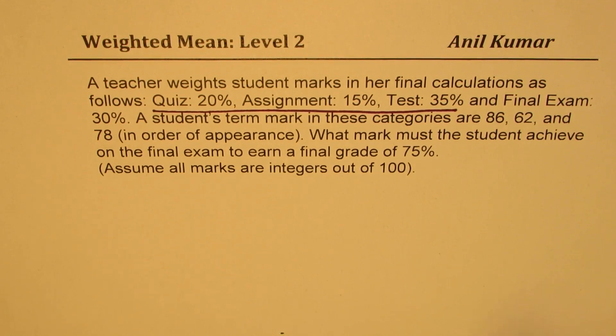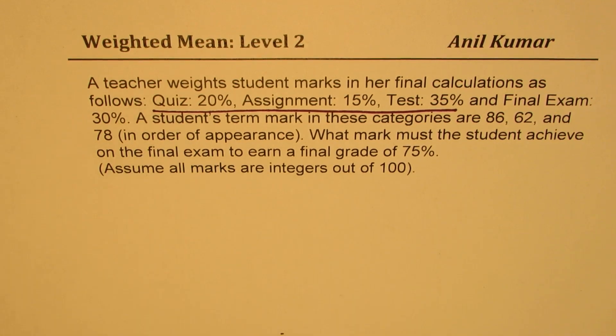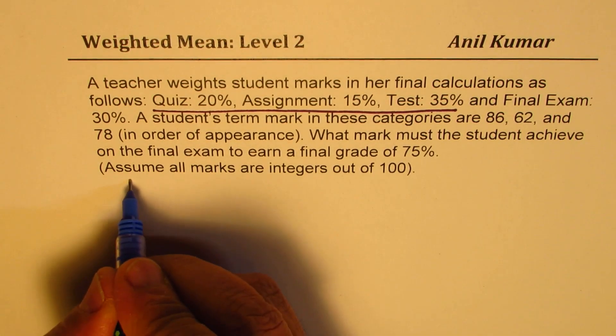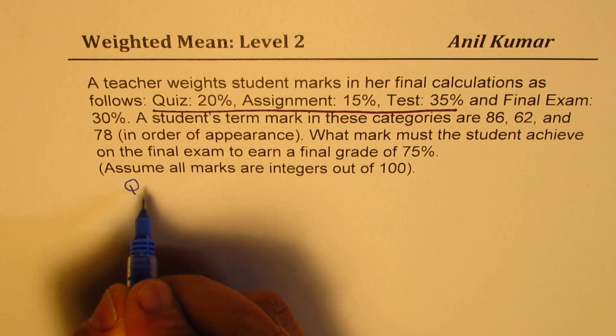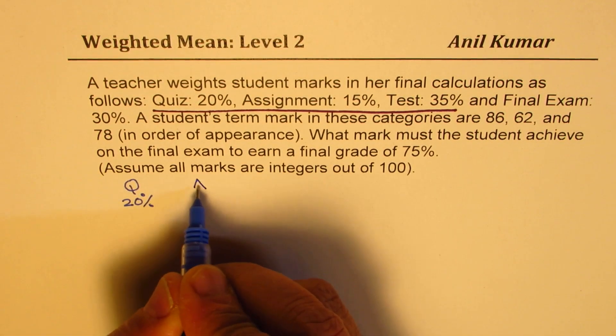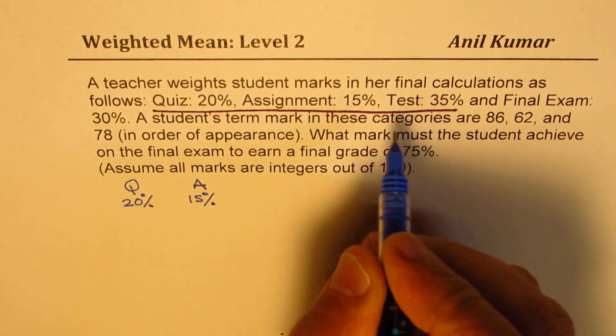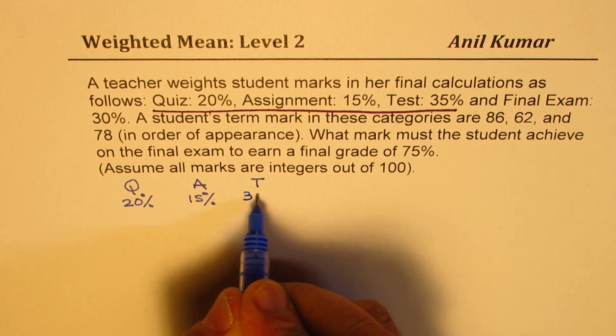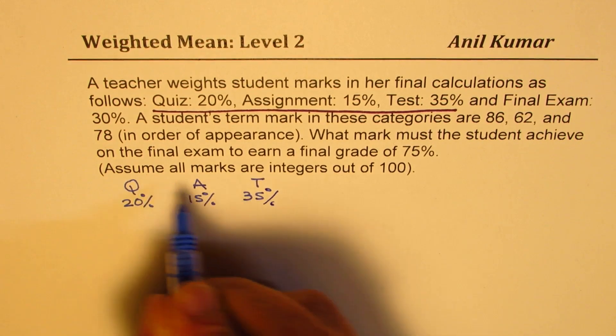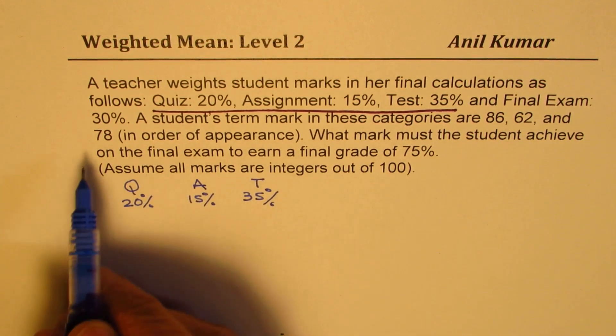As you can see here, the marks are weighted, so we have different categories. Let's rewrite the categories and their weightage. So Quiz, let's say Q, is 20%, and then we have Assignment, let's say A, is 15%, then we have Test which is 35%.